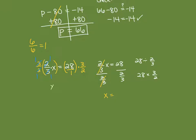On the right side, multiply 28 over 1 by 3-halves. You can multiply straight across: 28 times 3 is 84 in the numerator, and 1 times 2 is 2 in the denominator, giving 84 divided by 2 which is 42. Or use cross-reducing: 2 divides evenly into 28 and 2, giving 14 over 1, then 14 times 3 equals 42. So x equals 42.